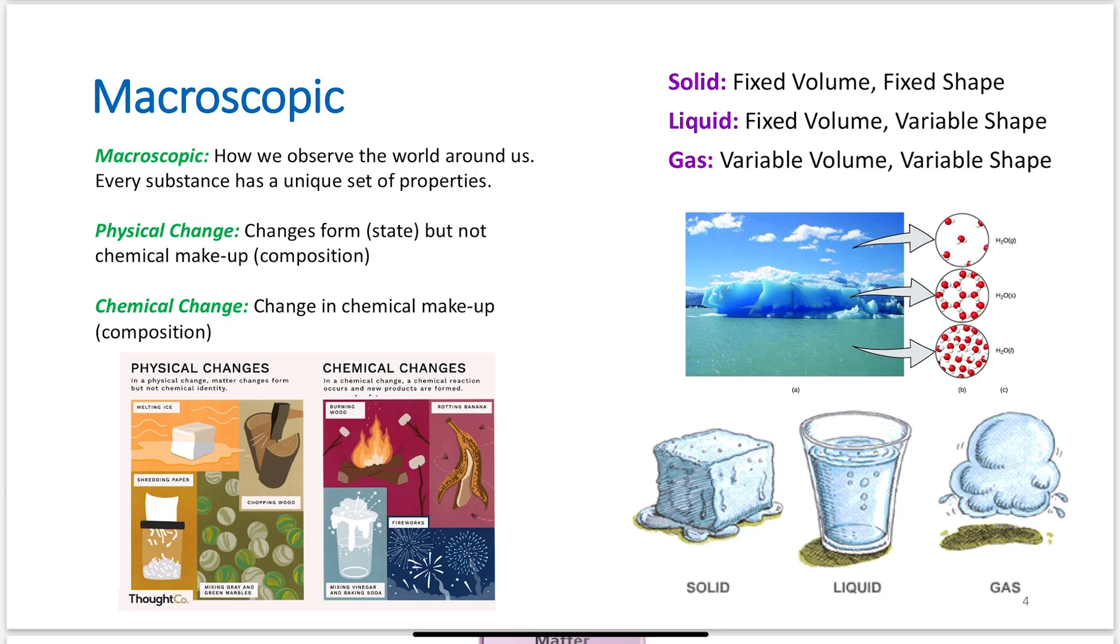The macroscopic view is how we observe that world around us. Every substance has a unique set of properties, and those unique set of properties are what set that substance apart from a different substance.